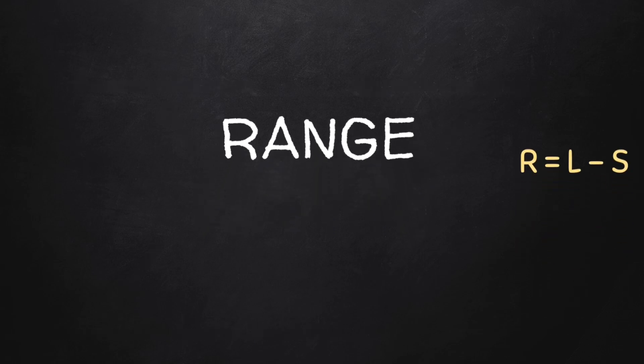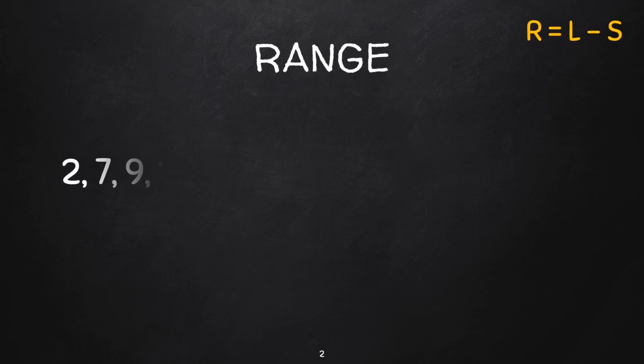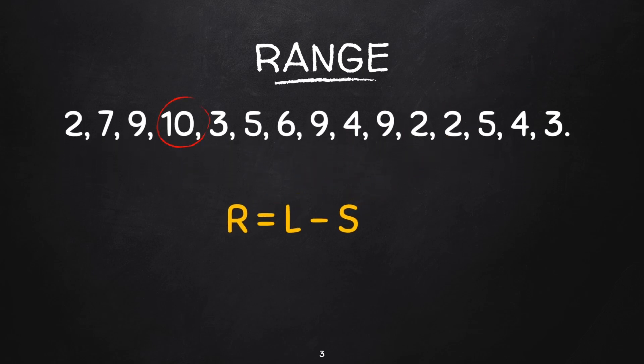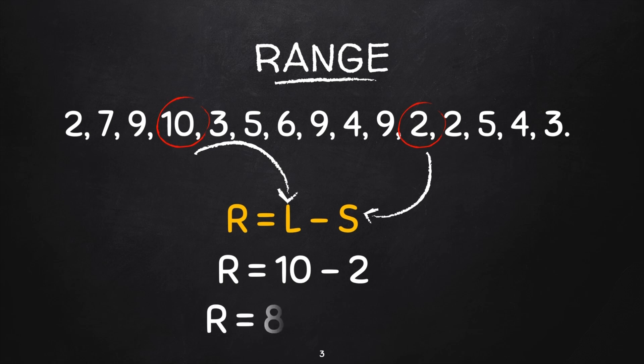Let us consider the following observations of the ages of children that attended the pediatric outpatient clinic on Monday. The range will be given by the largest value L, which is 10, minus the smallest value S, which is 2 years. So we can say the age range of patients that were attended to on that day was 8 years. Easy peasy.